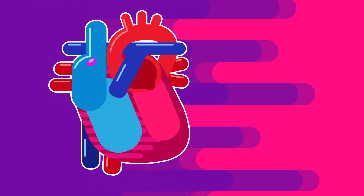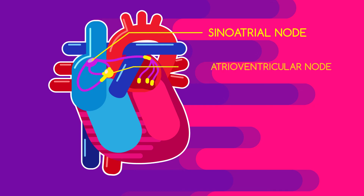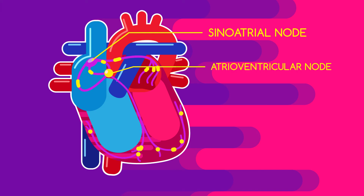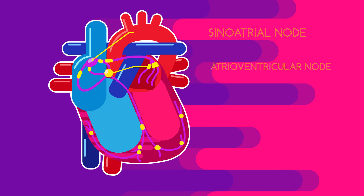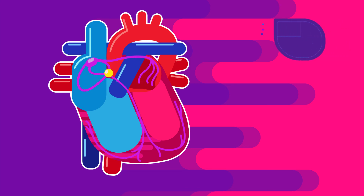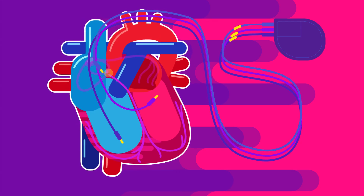On top of the right atrium is a natural pacemaker called the sinoatrial node. This produces an electrical impulse or signal to the atrioventricular node, which is found in between the atria and ventricles of your heart. The electrical conduction ensures the proper functioning of your heart. In some individuals, this system doesn't work perfectly, and so they can be fitted with a pacemaker to ensure the electrical impulses control the heartbeat properly.